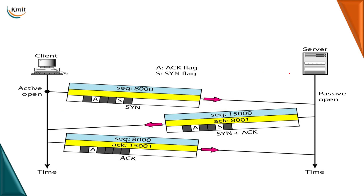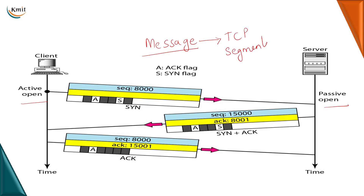The client is active open and the server is passive open. The client will send a message to the server in the form of TCP segments. I will make use of the concept of sequence numbers, acknowledgements, control flags, and window size for establishing the connection. The client will generate a TCP segment with a randomly generated sequence number — for example, 8000 — and we will set the SYN (synchronize) flag.